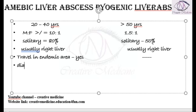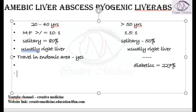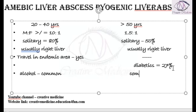Diabetics have a more common incidence in pyogenic liver abscess, at approximately 27 percent. Alcohol use is common in both amoebic liver abscess and pyogenic liver abscess.